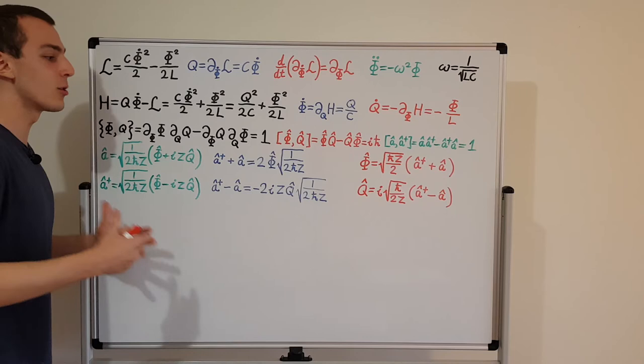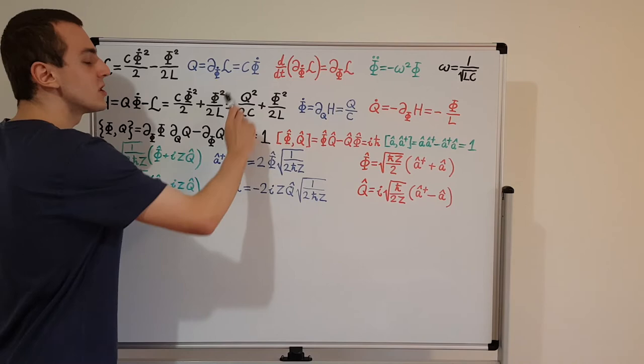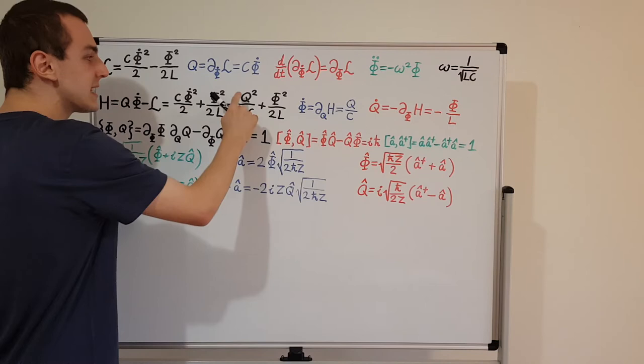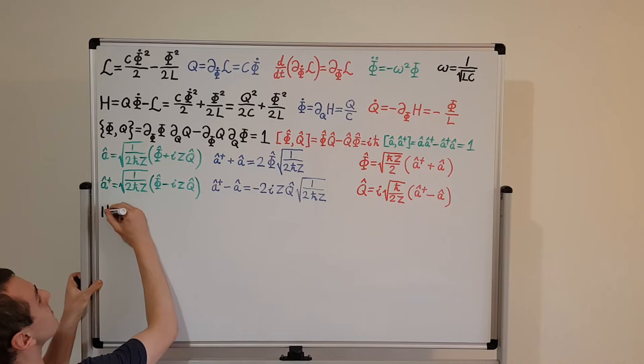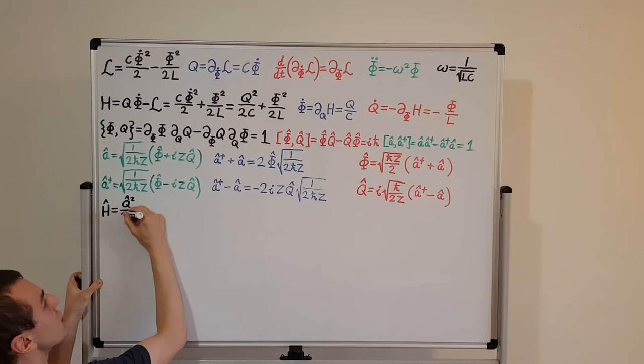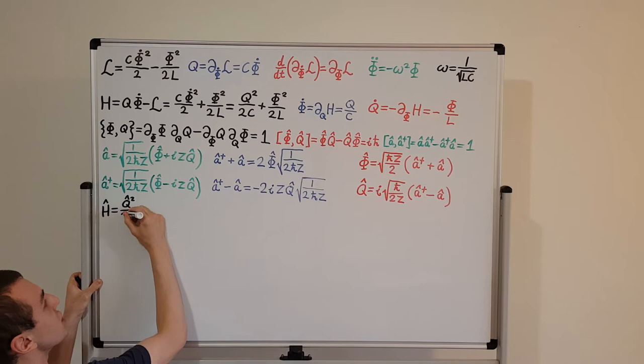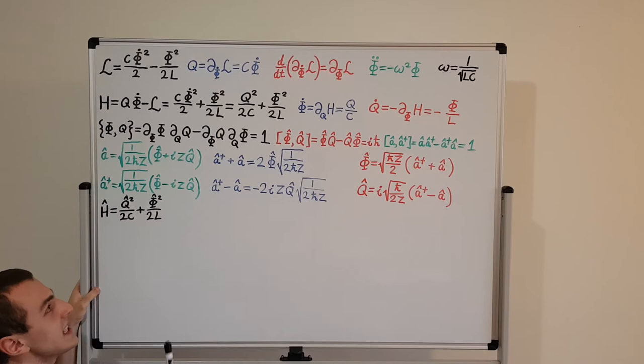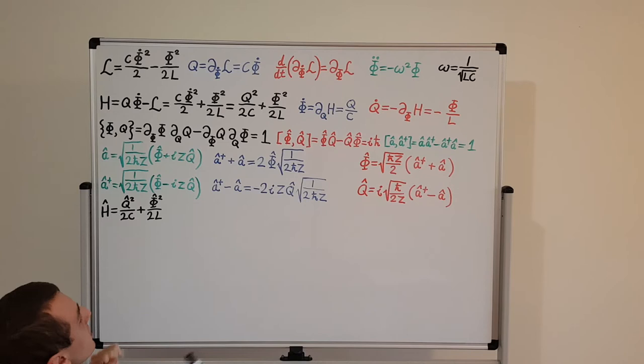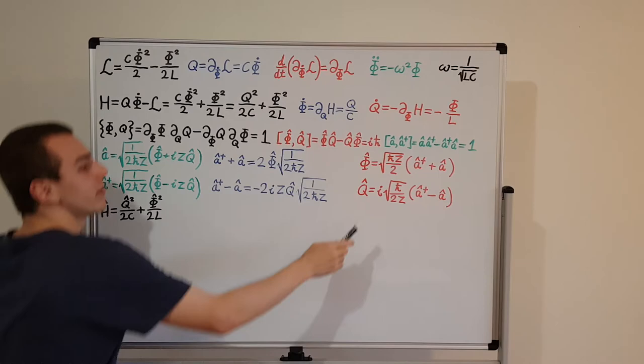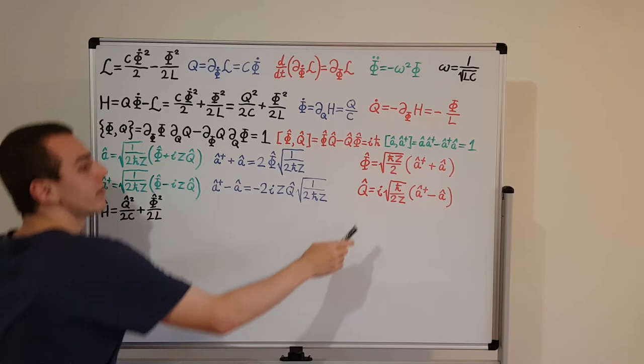Now let's write the Hamiltonian in quantum mechanics. The classical Hamiltonian is Q squared over 2C plus phi squared over 2L. Turning these into operators, the quantum Hamiltonian is Q-hat squared over 2C plus phi-hat squared over 2L. This is reasoning by analogy — we're just taking our classical understanding and translating it into the language of operators. Now we can substitute the ladder operator expressions into this Hamiltonian.